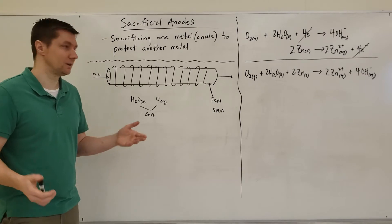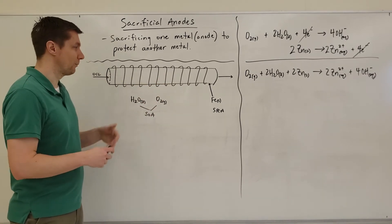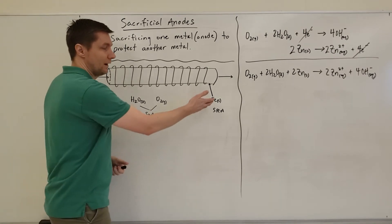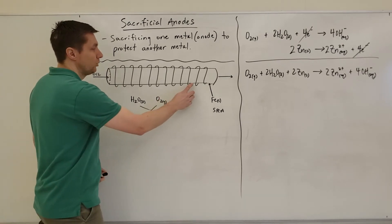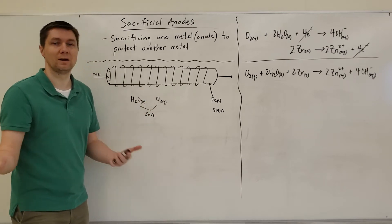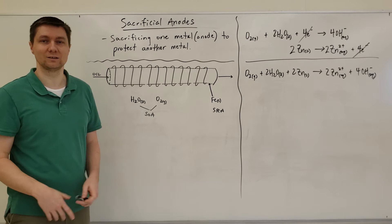This is bad because if the iron starts to oxidize, it's losing electrons. Iron turns into iron 2+ ions, which are soluble in water, and you end up with little holes throughout the pipeline. Holes in the pipeline are bad because then your money starts seeping into the ground, and that's not good for business.